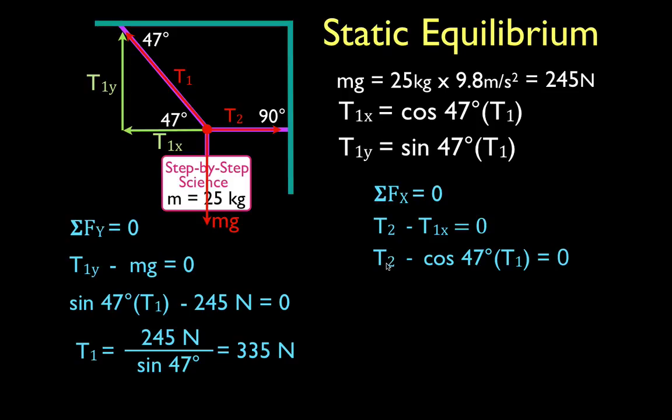And we can simply solve for T2. Move this to the other side, we get that T2 is equal to the cosine of 47 times T1, we know T1 is 335, substitute that in, T2 is the cosine of 47 times 335, and we get finally that T2 is equal to 228.5 newtons.